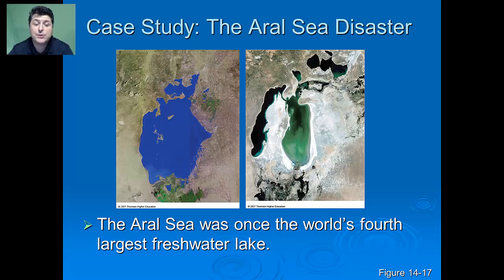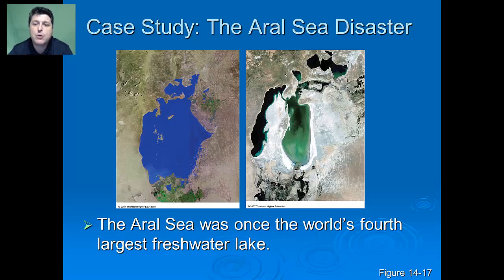The Aral Sea used to be the world's fourth largest freshwater lake. Water was diverted from it and its two feeder rivers, mostly for irrigation, and now we have a major ecological, economic, and health disaster. About 85% of the wetlands it supported have been eliminated, about 50% of local bird and mammal species have completely disappeared, the sea's salinity has tripled since 1961, water levels have dropped by 22 meters, and 20 to 24 native fish species have likely gone extinct.